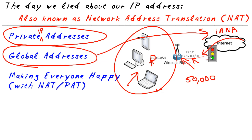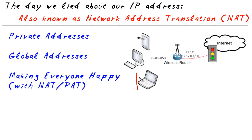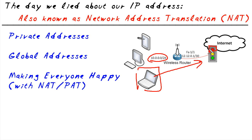So why do we need to lie about our IP addresses? Consider this: a PC on the 10 network wants to go out to the internet. If it sends packets out, its source IP address is from the 10 network, and the service provider says no — private addresses are not allowed on the internet because it would be confusing. Private addresses have to stay private. So what about Bob? Bob is a client who wants to go to the internet. What do we do? We lie. That's why I called it the day we lied about our IP address.